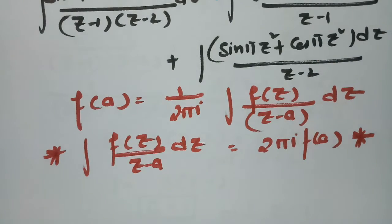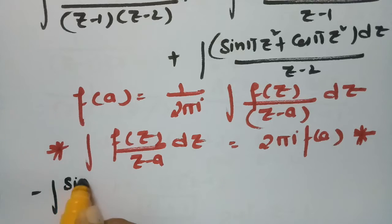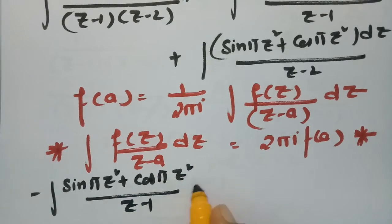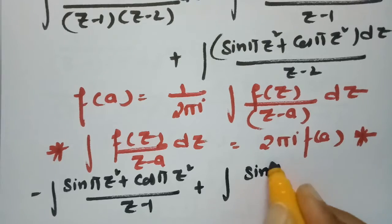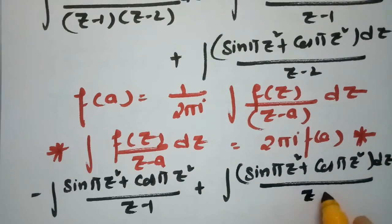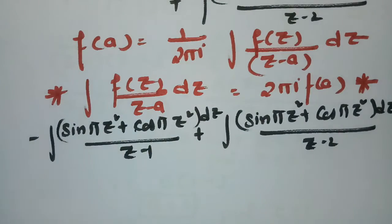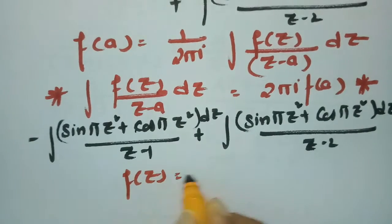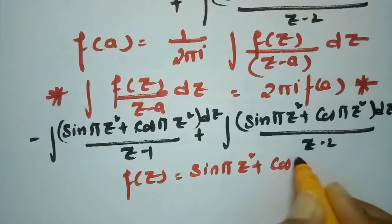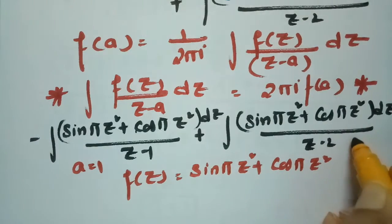Applying Cauchy's integral formula to both integrals: comparing with the standard form, f(z) = sin(πz²) + cos(πz²). For the first integral, a = 1; for the second integral, a = 2.